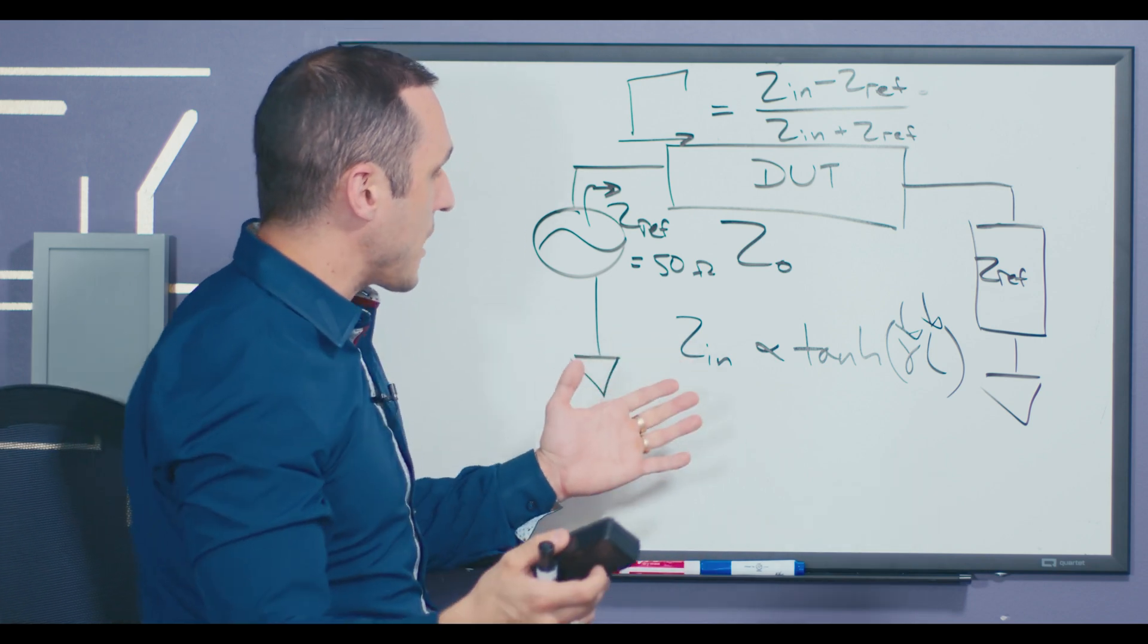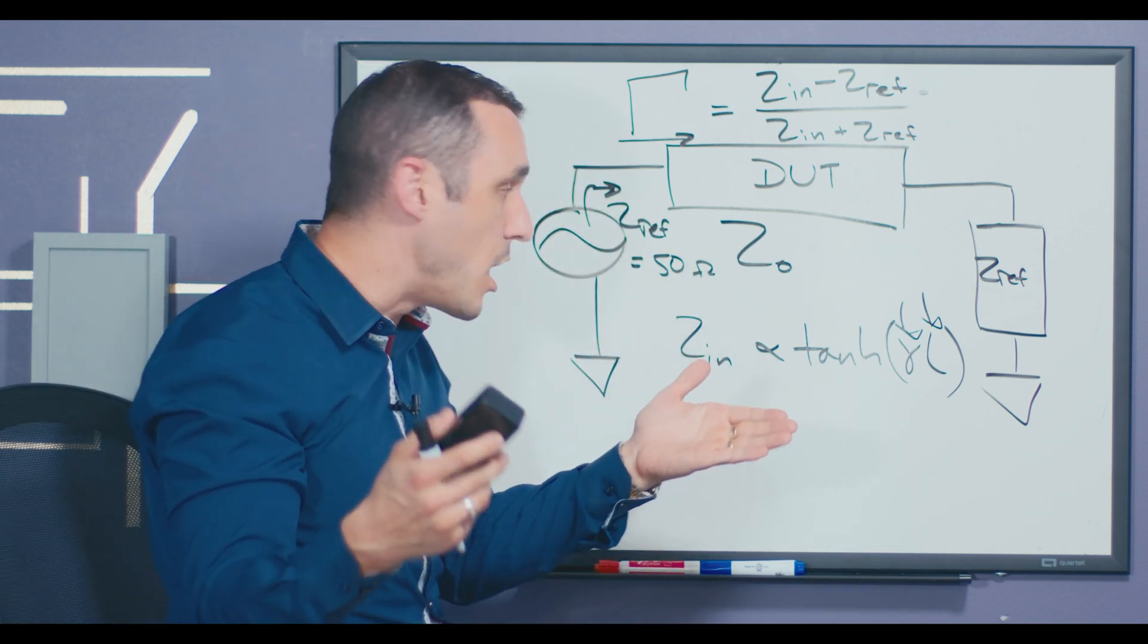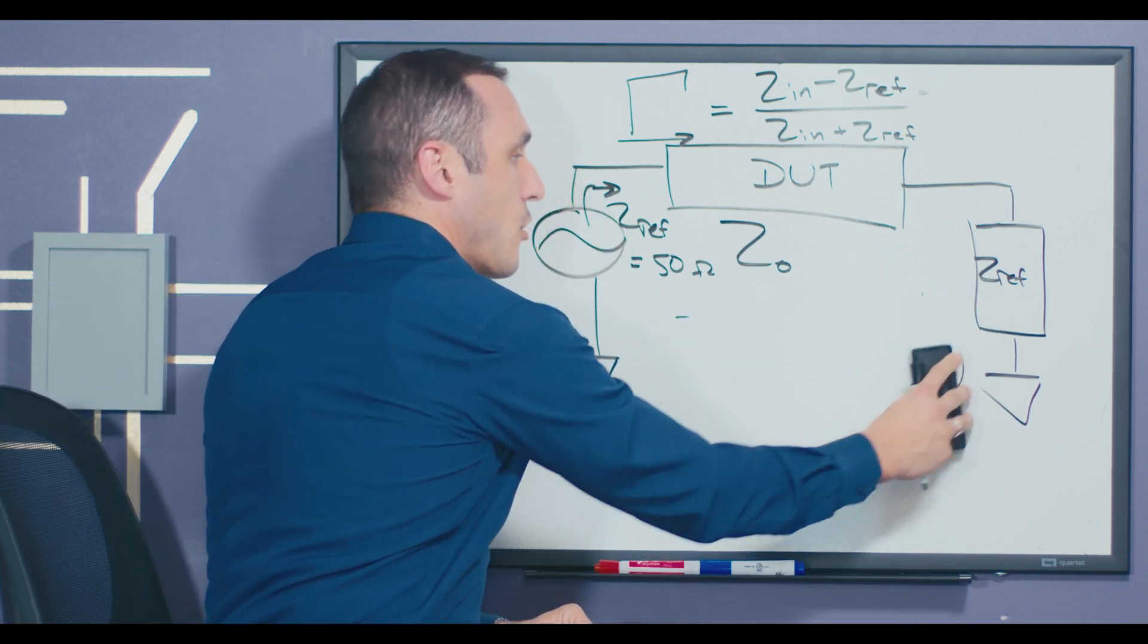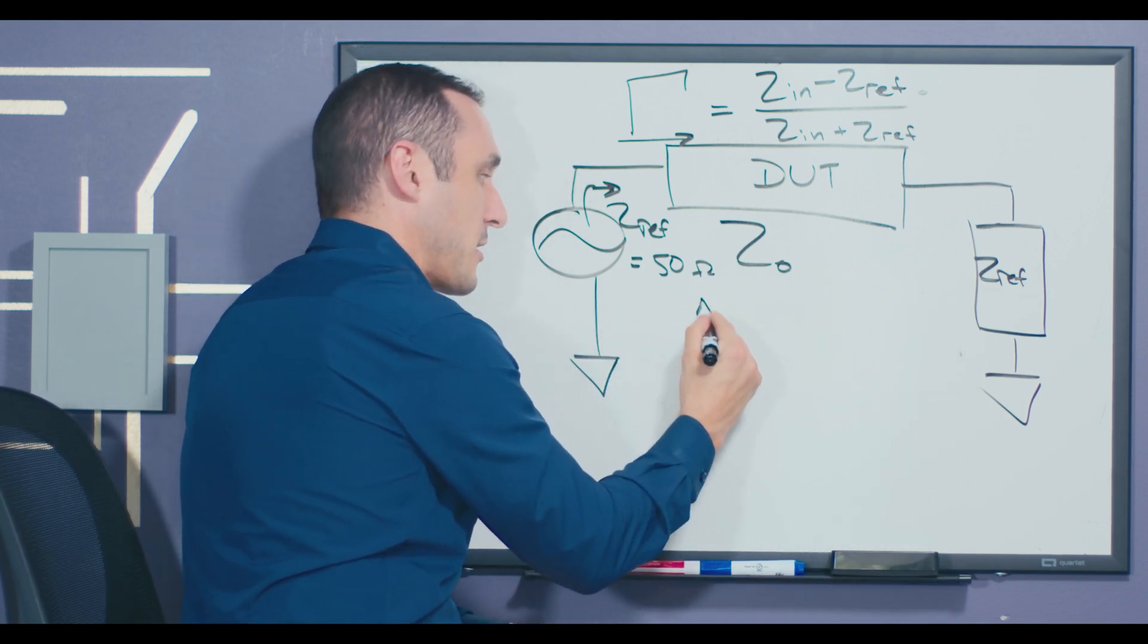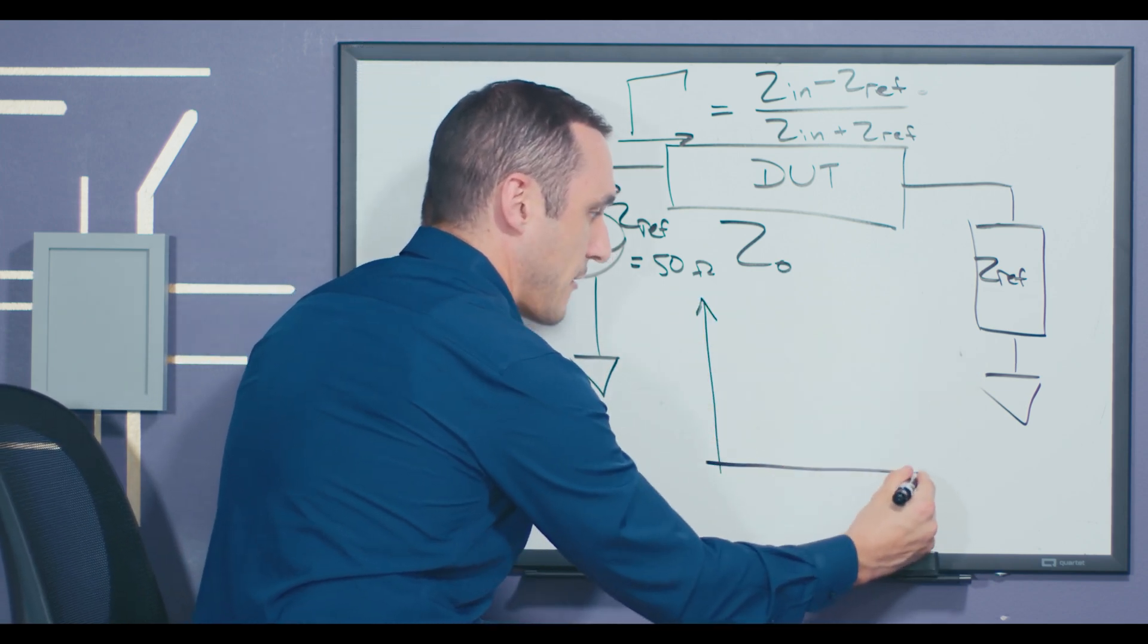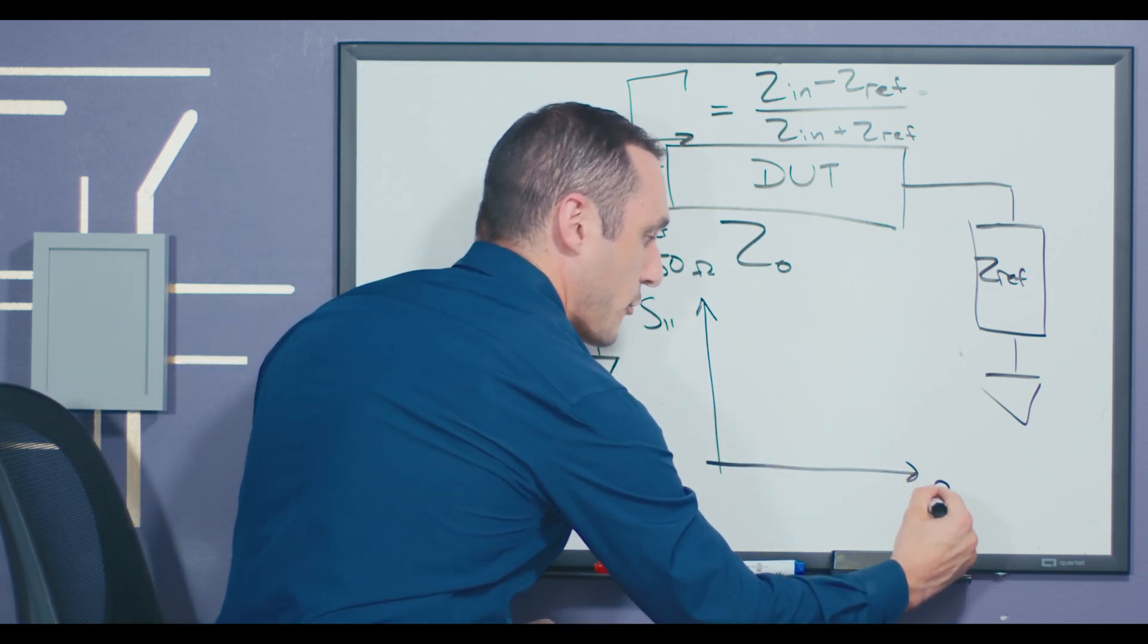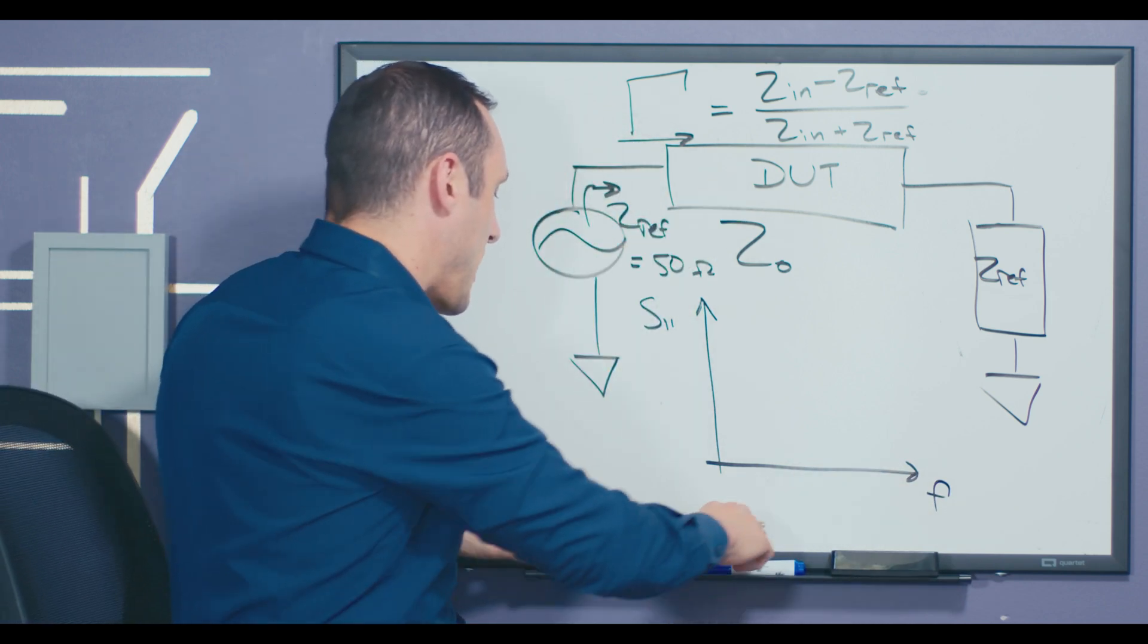So what can we expect from a graph of reflection coefficient or a graph of S11 if we then plot this out over frequency? Well, what I'll do right now is just draw out a graph that you might expect. So if we were to look at, for example, S11 and we were to plot this out over frequency, we would see different things depending on the length of this transmission line.